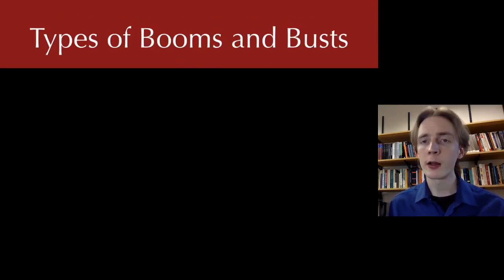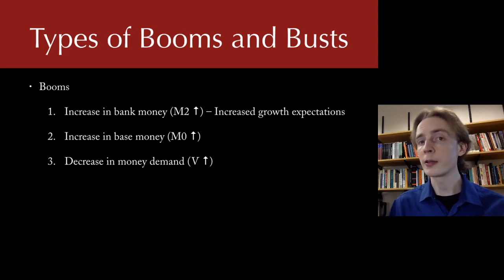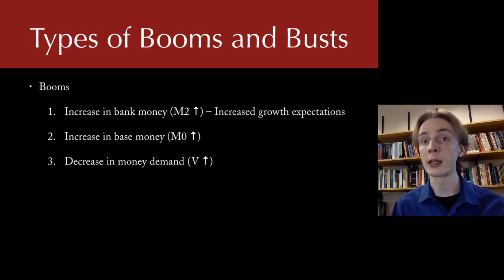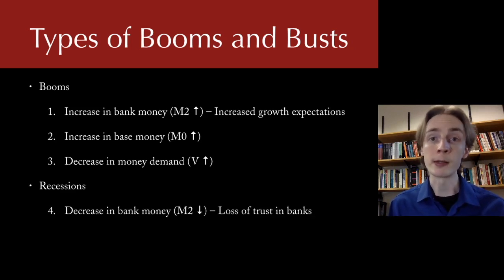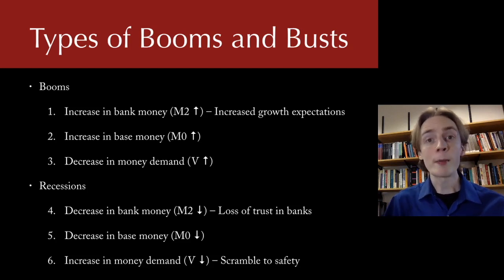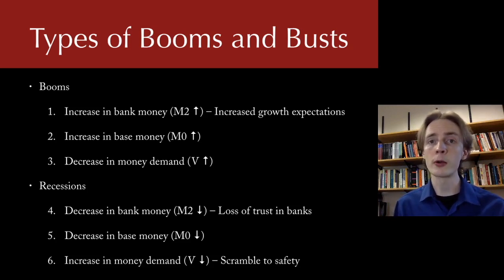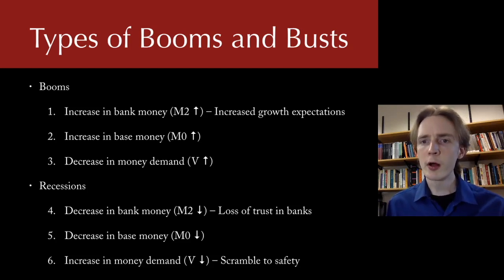Let's come back to our taxonomy. We've divided our booms into three types: an increase in bank money, an increase in base money, and a decrease in money demand. Any of these are sufficient to cause a boom because any of these raise the volume of spending. We've talked about an increase in bank money so far — when there are increases in growth expectations, when people increase their trust in banks. We have the corresponding three types of recessions: a decrease in bank money, a decrease in base money, or an increase in money demand. Any of these are sufficient to send the economy into a recession. We've talked about why bank money might increase, why it might decrease if people lose trust, or why money demand might decrease — for example, a scramble to safety when people increase their demand for money to insulate themselves from impending economic disaster.